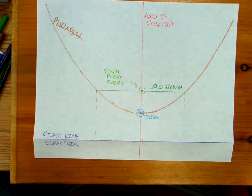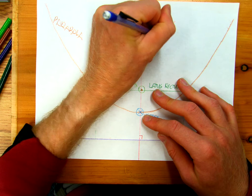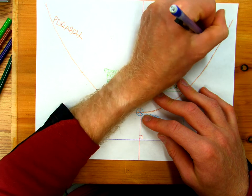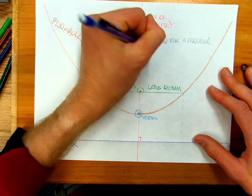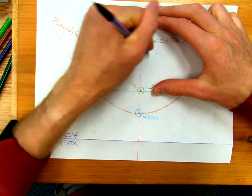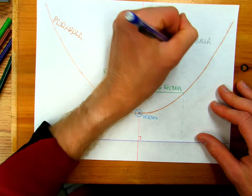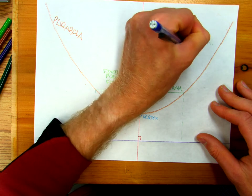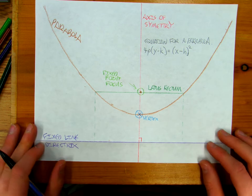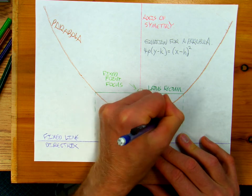Okay, so now if I look at my equation for a parabola, there's a bunch of different equations, but the one that I'm going to give you is 4p times (y minus k) is equal to (x minus h) squared. That's what I want to give you. Okay, so what that means is here the vertex has coordinates h, k.